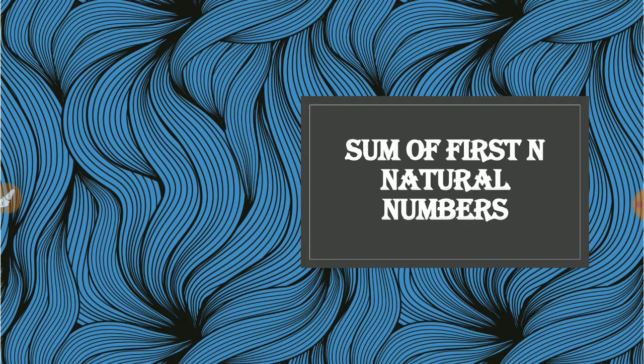These numbers are forming an AP because 2 minus 1 is 1, 3 minus 2 is also 1. So I get an AP with the first term as 1 and the common difference also as 1.